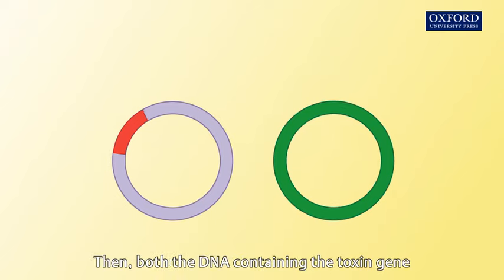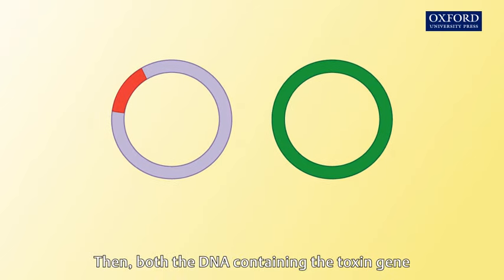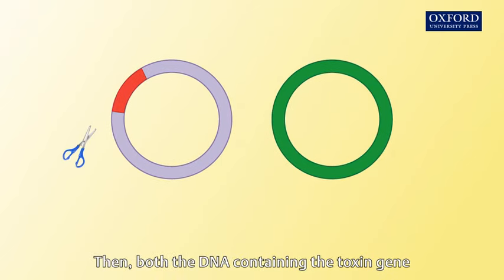Then, both the DNA containing the toxin gene and the plasmid are cut using the same restriction enzyme.